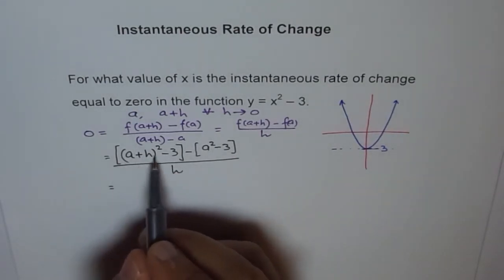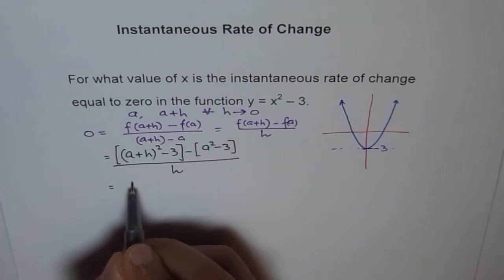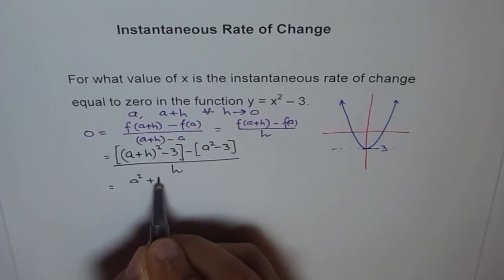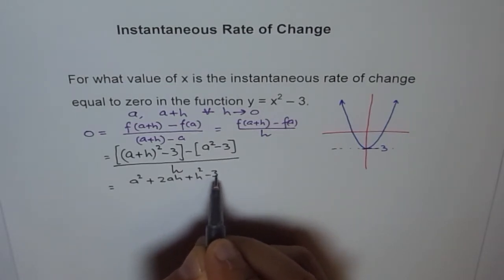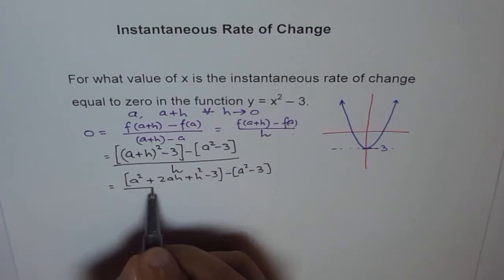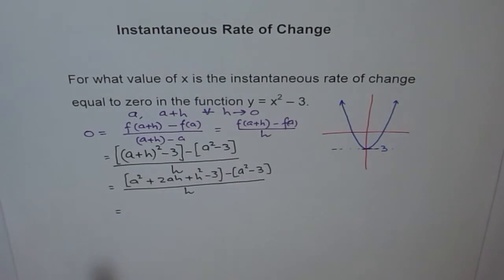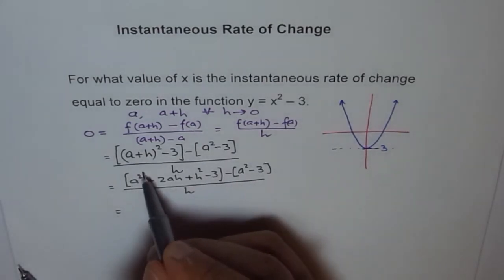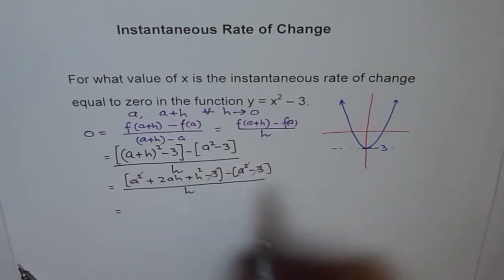This is how it is. And now we can expand this. So A plus B whole square is A square plus 2AB plus B square. So we'll use that and then expand this. So if we do so, we get A square plus 2AH plus H square minus 3 minus A square minus 3. And this is equal to, from here, we can say A square minus A square is 0. So let me just strike this out and minus 3 and minus 3 will be 0. So we are left with these terms.